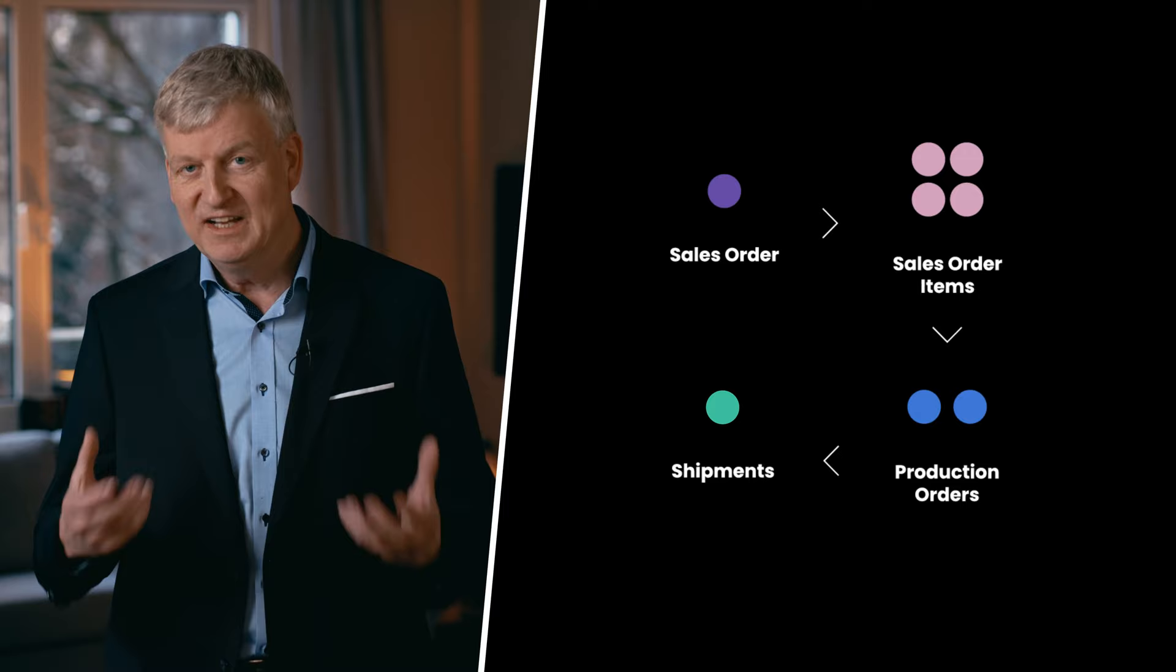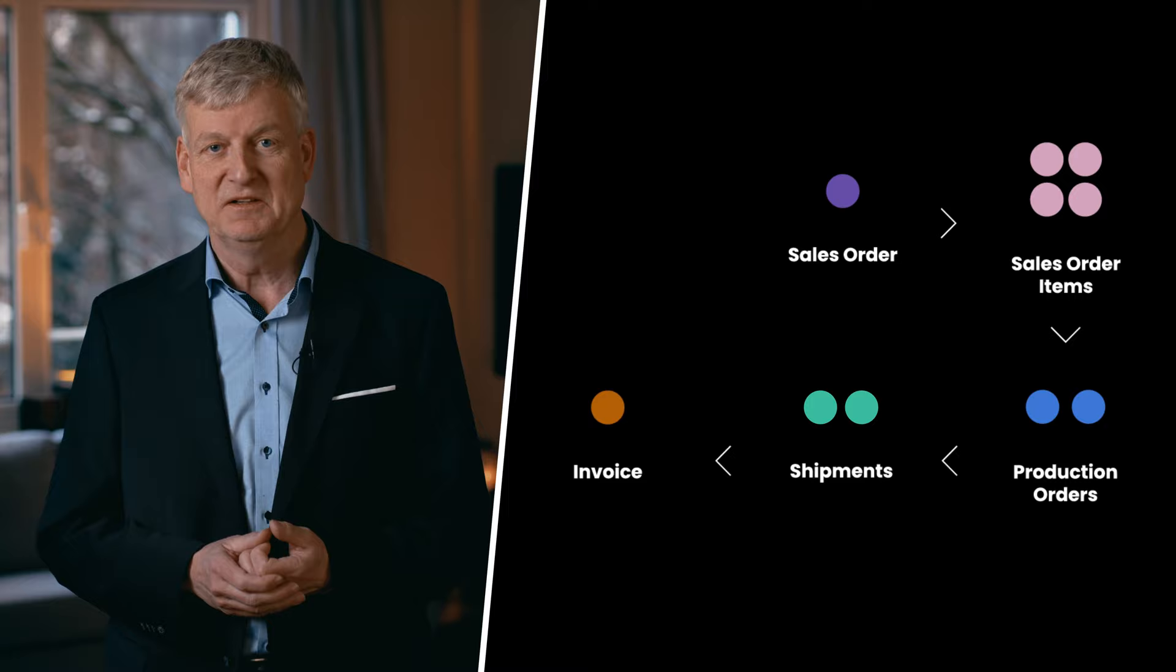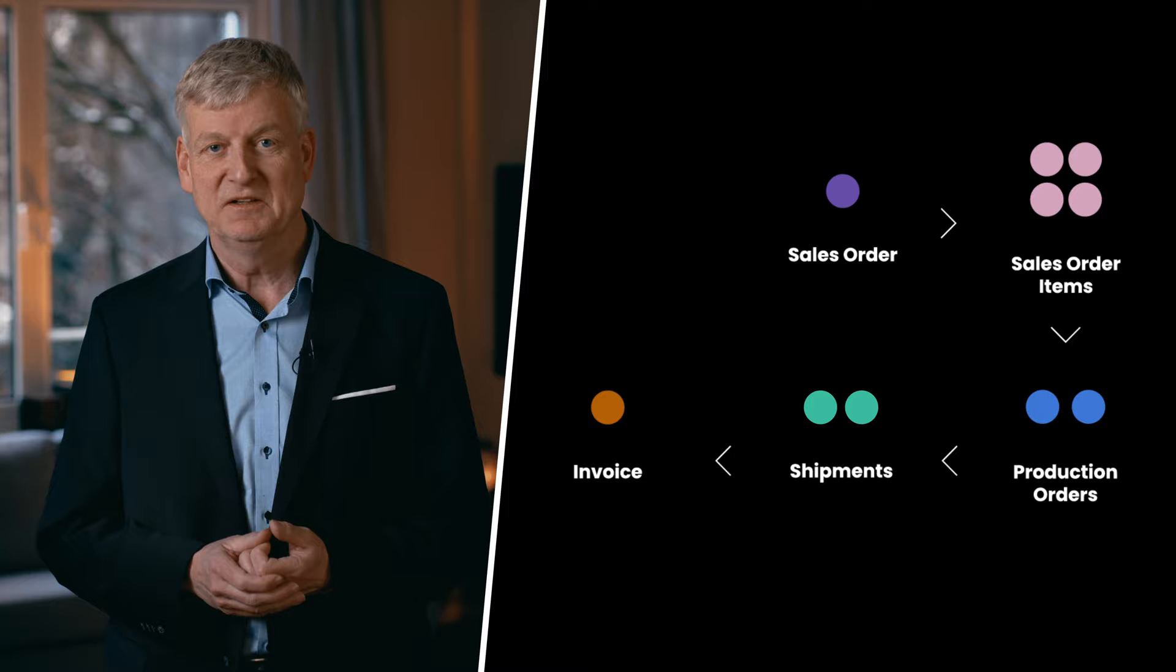A few days later, after the production orders are complete, the three remaining items are packaged and shipped together. The customer is then sent one invoice via email. In this simple real world example, we see many to many relationships between objects. We saw one sales order with four items, three production orders, two shipments and one invoice.